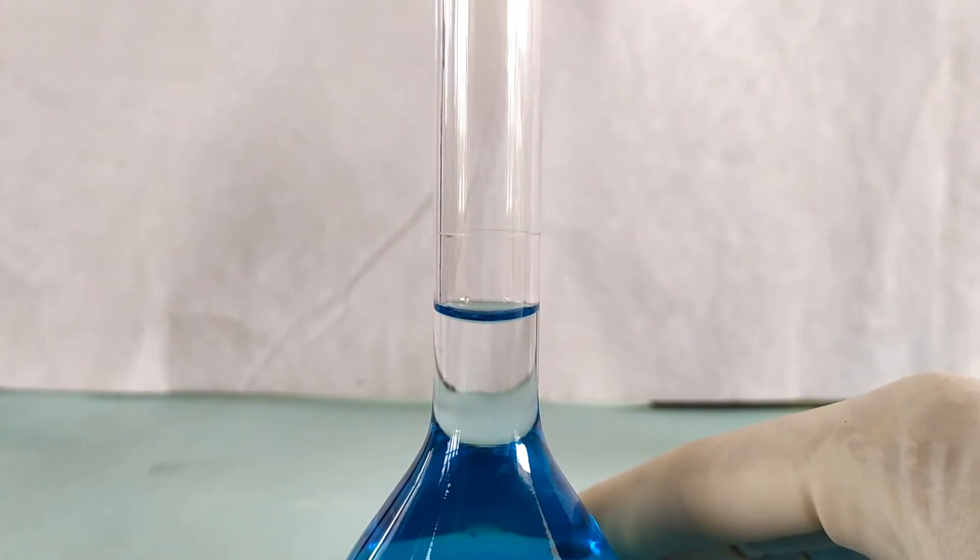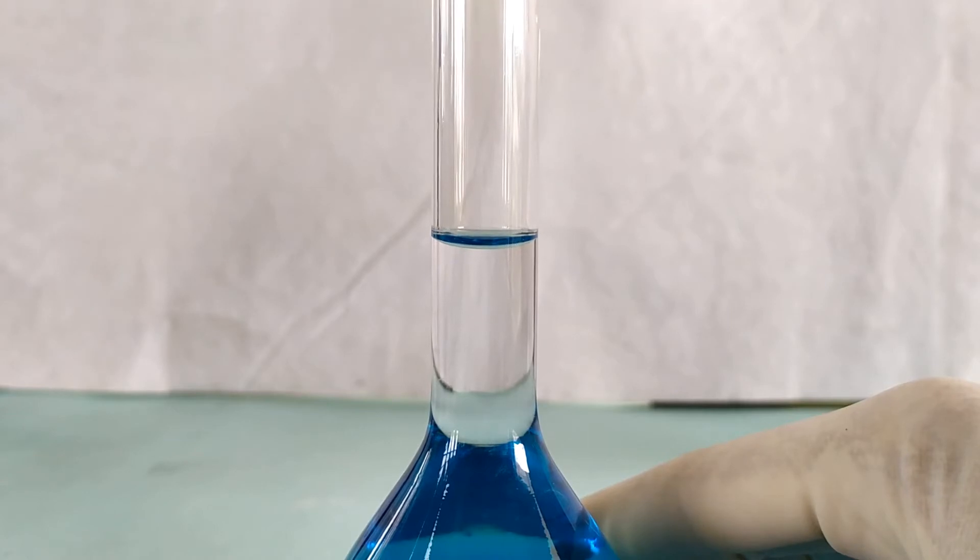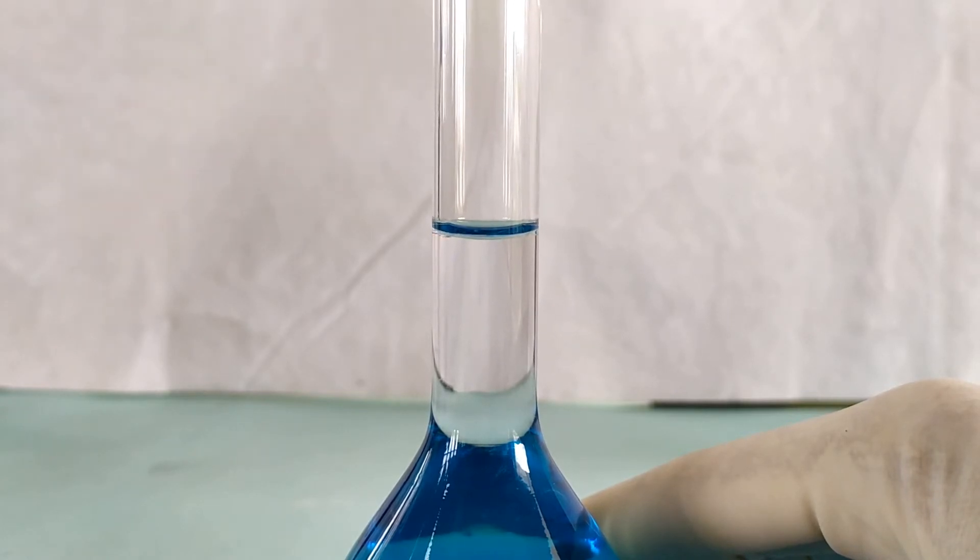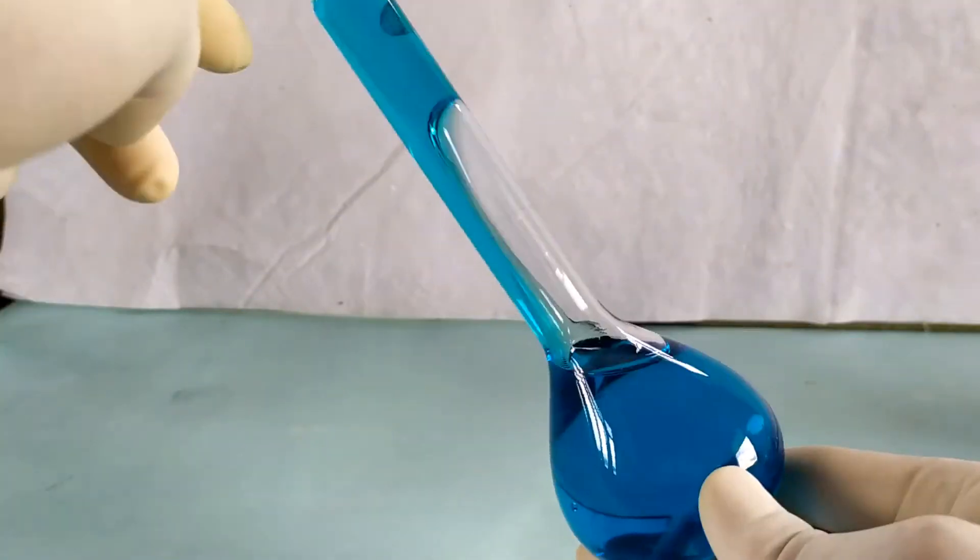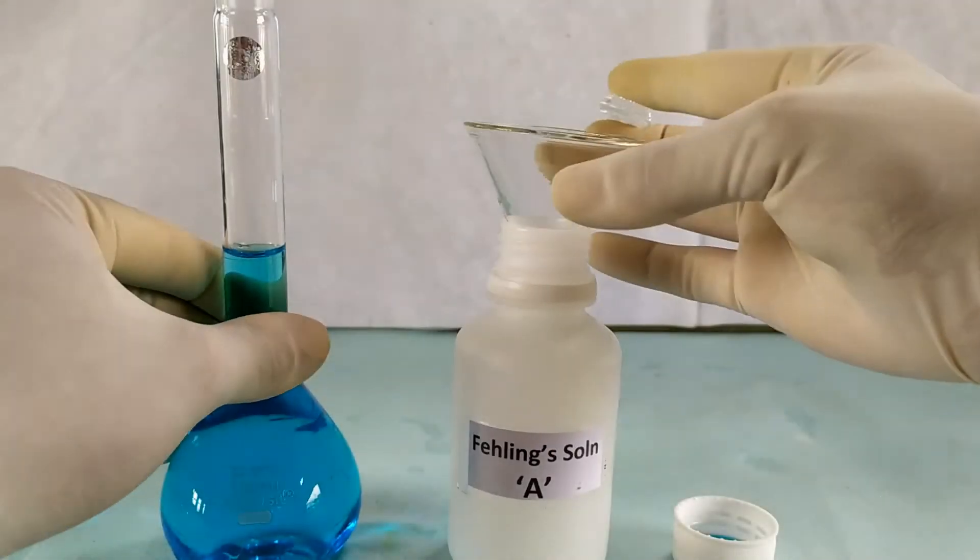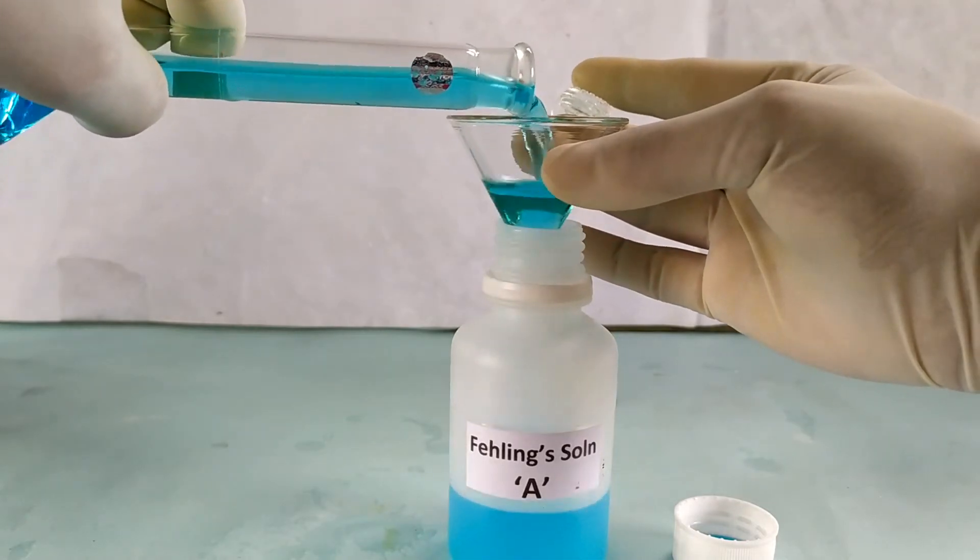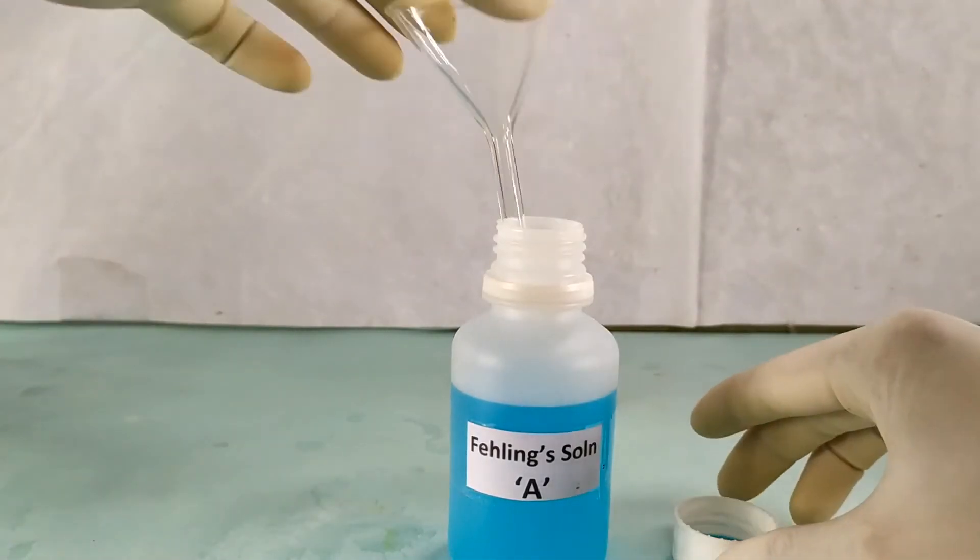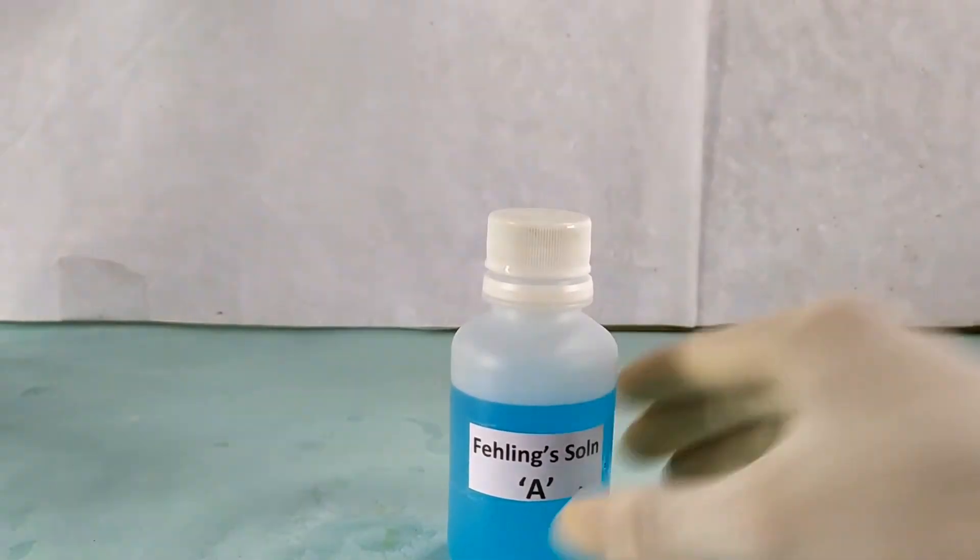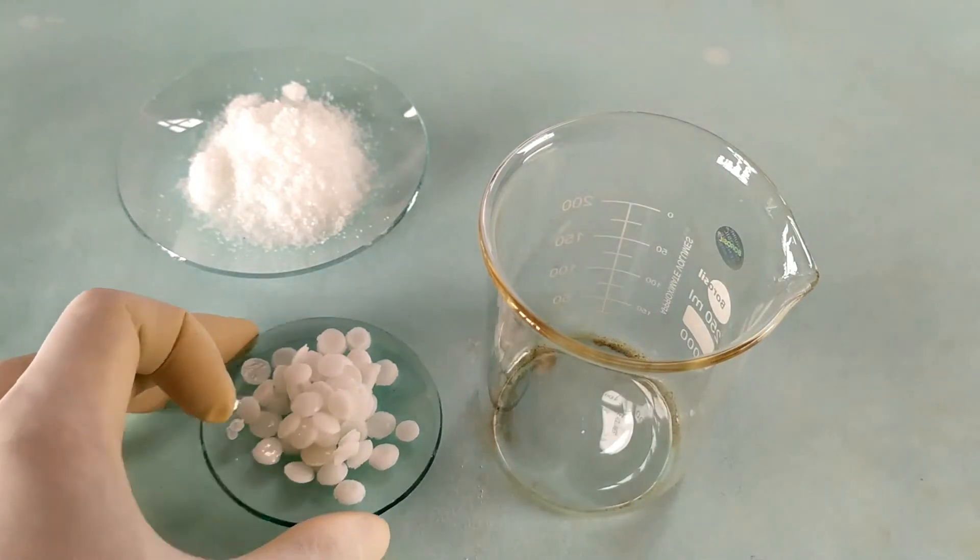Make up the final volume in the flask to 100 ml with distilled water using a dropper or pipette. Stopper the flask and mix the contents well by inverting the flask a few times. Transfer the solution into a container with a tight-fitting cap and label it as Fehling's solution-A. Keep the container aside and proceed with the preparation of Fehling's reagent-B.